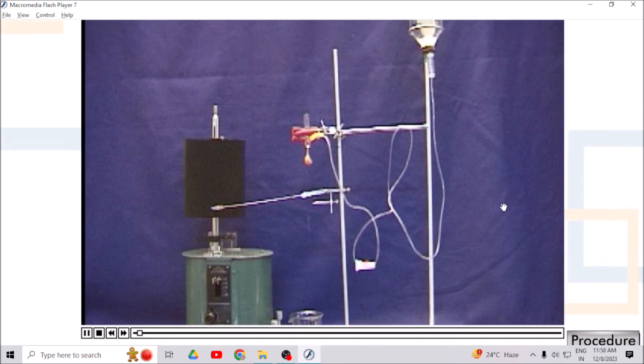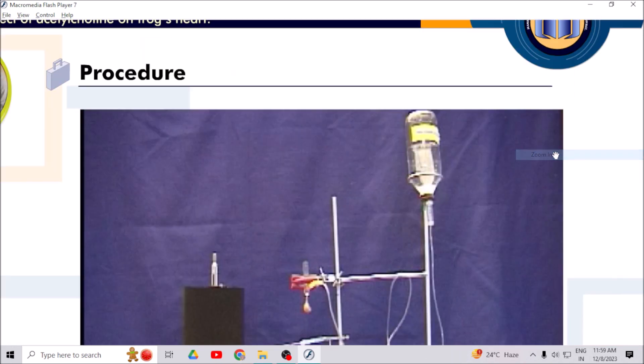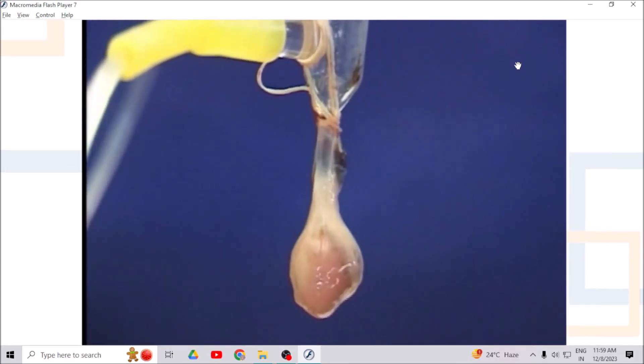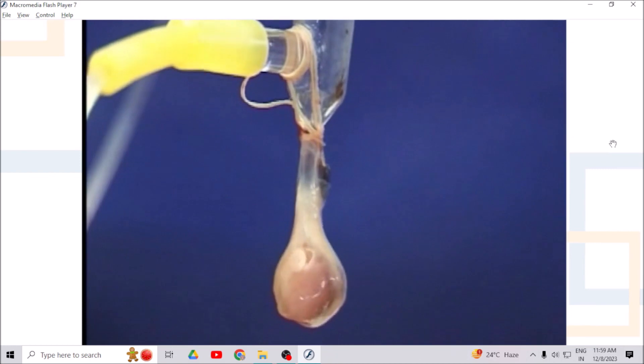We have already learned the isolation technique of frog's heart preparation. To study the effect of acetylcholine on frog's heart, perfuse the heart with frog Ringer solution.